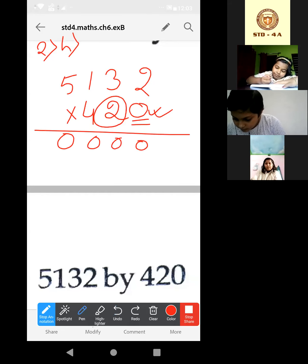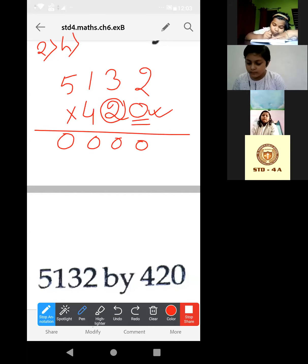Now by 2. If we want to multiply by 2 then in 1 space we have to put 0. Now, 2 times 2 is 4, 2 times 3 is 6, 2 times 1 is 2, 2 times 5 is 10.